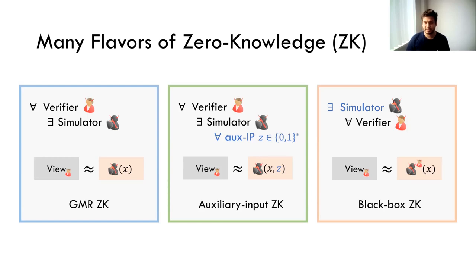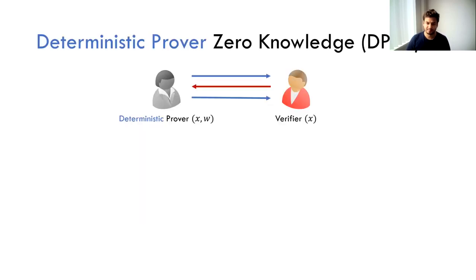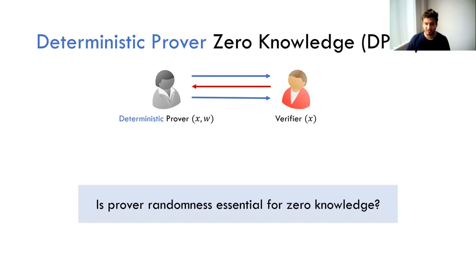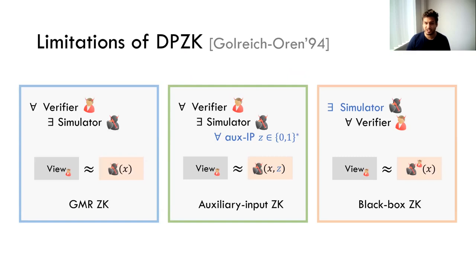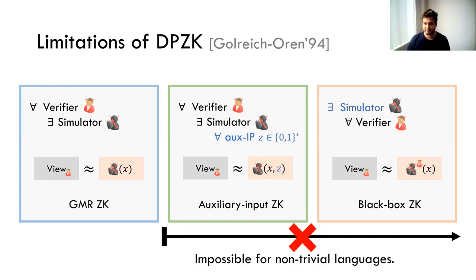Those are the three flavors of zero knowledge important for this talk. When zero knowledge was introduced it rested on two foundational aspects: interaction and randomness. In this talk we ask: if we have a completely deterministic prover, can we have some meaningful notion of zero knowledge? The first answer regarding deterministic provers was provided in the seminal work by Goldreich and Oren, which showed that a deterministic prover satisfying auxiliary input zero knowledge or black box zero knowledge is impossible for non-trivial languages.